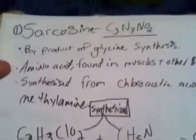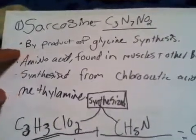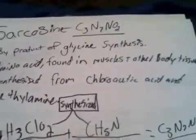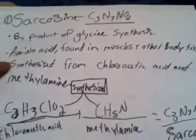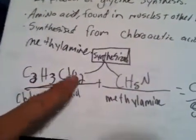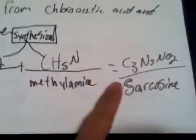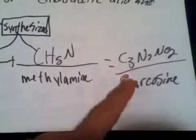The first is sarcosine, C3N7NO2. It's a byproduct of glycine synthesis, an amino acid found in muscles and other body tissues. When chloroacetic acid, C2H3ClO2, and methylamine, CH5N, synthesize, it creates sarcosine, which is C3N7NO2.